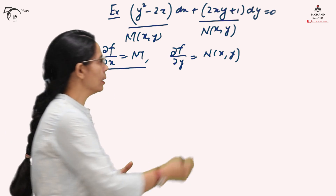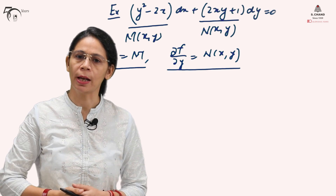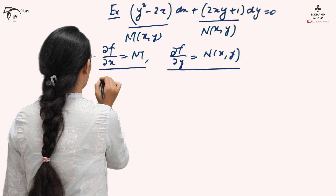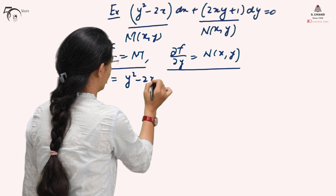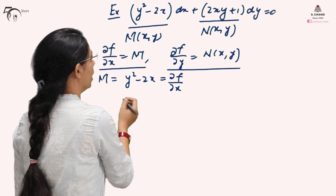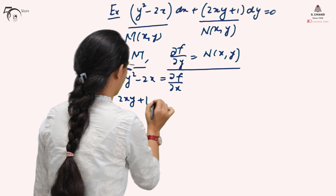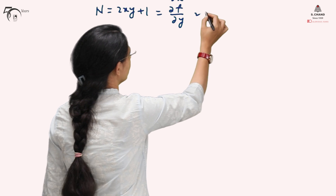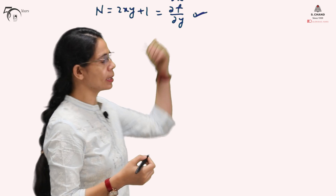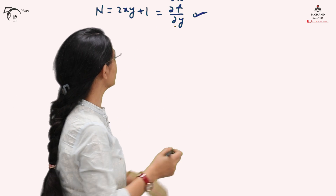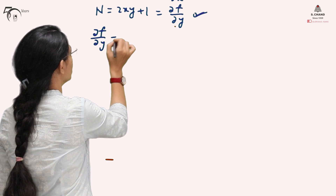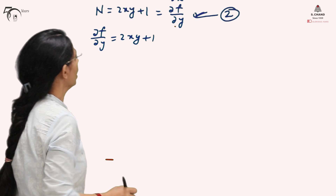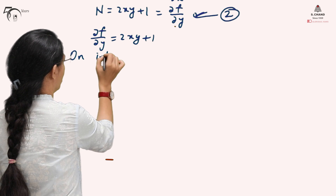Now we can start with the expression ∂f/∂y and find f(x,y) = c. So M = y² − 2x = ∂f/∂x, and N = 2xy + 1 = ∂f/∂y. This time we will take ∂f/∂y as our initial expression. We start with: ∂f/∂y = 2xy + 1 — let me call this equation (1).